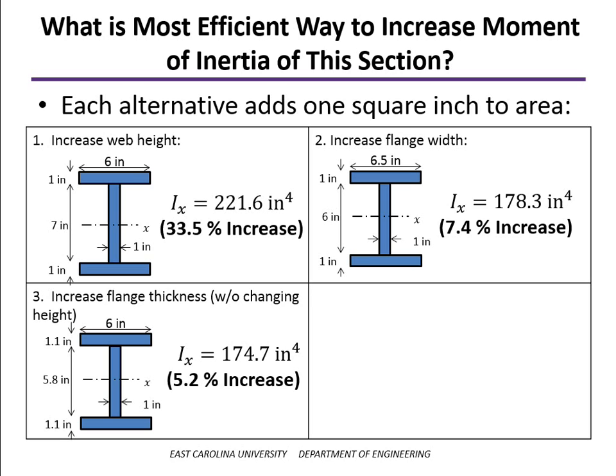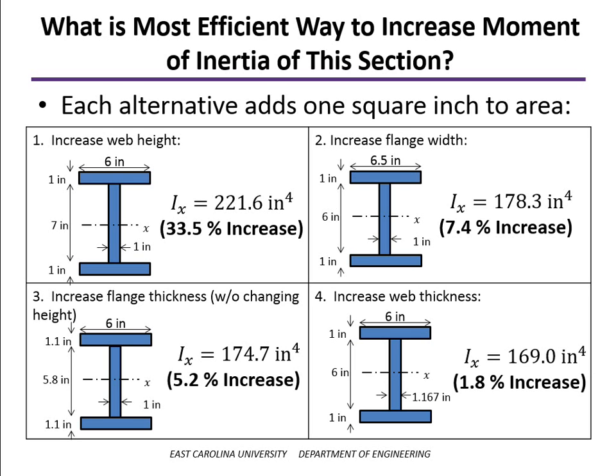The least efficient way is to increase the web thickness, only about 1.8% increase. The web has to be there. You have to have a minimum thickness to transfer the shear forces and prevent buckling on the portion in compression, but it doesn't add a whole lot to the overall beam stiffness.